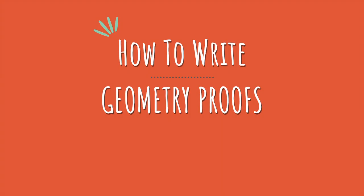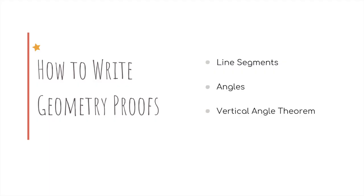Hey everyone! Today we're talking about how to write geometry proofs. We'll do three examples together, one with line segments, supplementary angles, and finally a proof of the vertical angle theorem. Before we get started, be sure to like and subscribe for more math tutorials like this. Let's go!